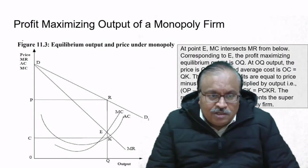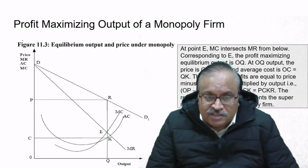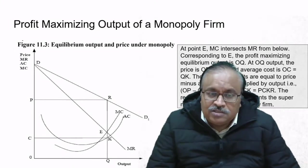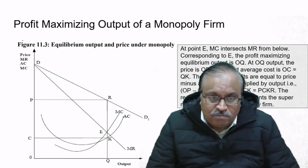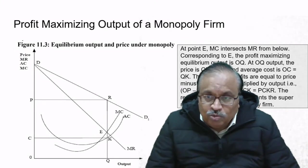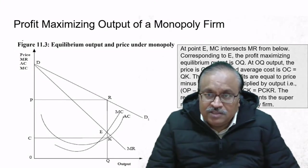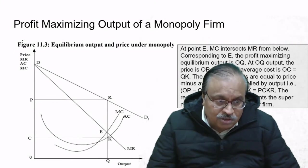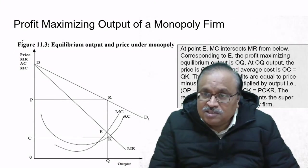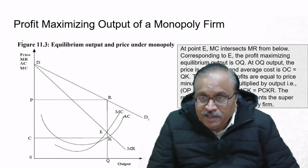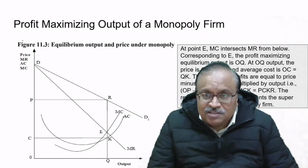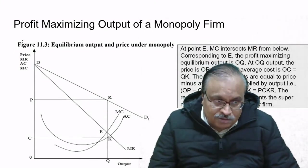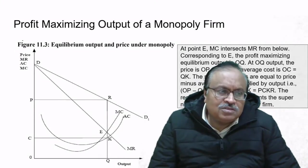We have already explained the characteristics of monopoly. Looking at the graph again: at point E, marginal cost (MC) intersects marginal revenue from below. Corresponding to point E, the profit maximization equilibrium output is OQ—that is the quantity. OQ is the maximum output at level E. At output OQ, the price is OP, which equals QR.